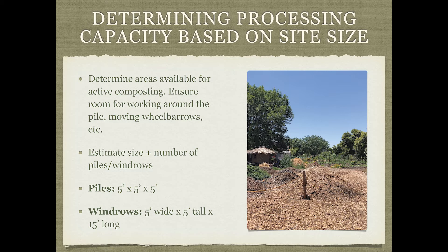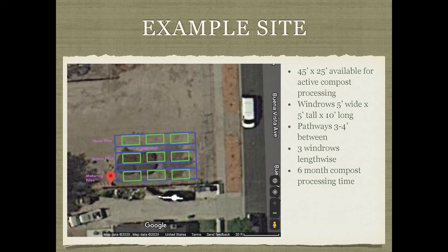Starting with site size as the limitation: first, understand where your composting area is, estimate the dimensions of that area, and start placing your different site elements — feedstock storage, tool shed, screening area, and active compost area. Think about where your piles and windrows will go, how they'll get turned, and what size dimensions those piles and windrows will be. For example, big round piles might be five feet in diameter and five feet tall; long windrows might be five feet wide, five feet tall, and fifteen feet long.